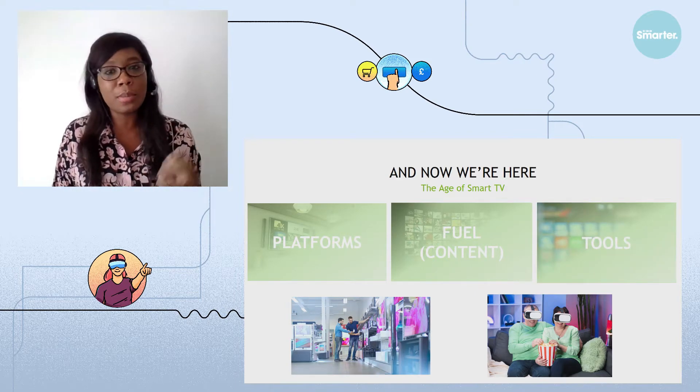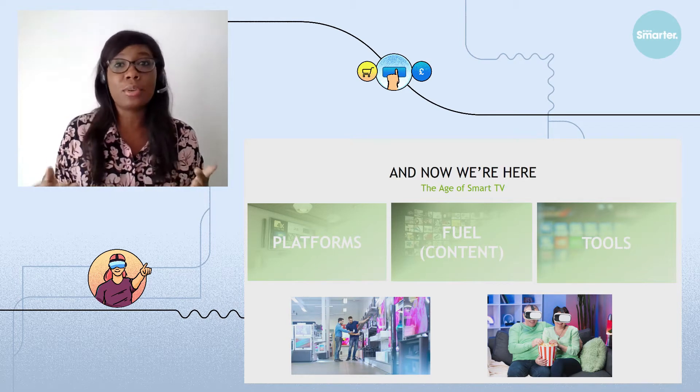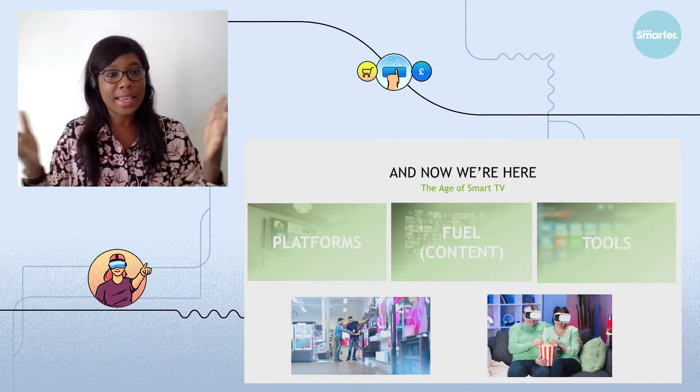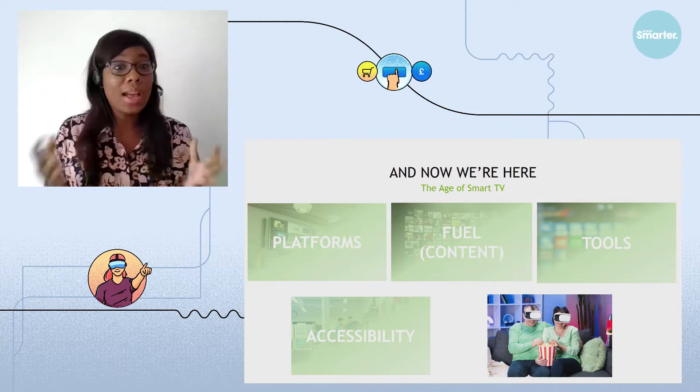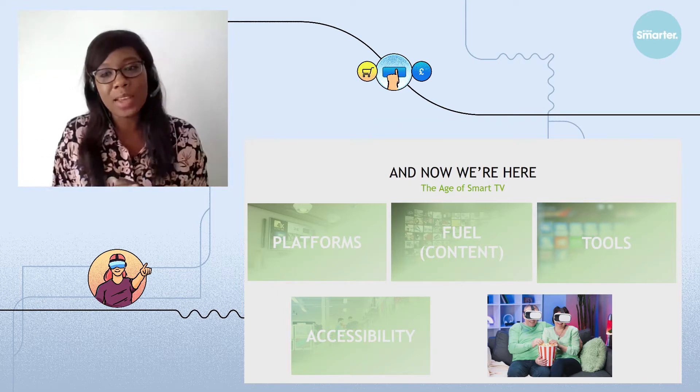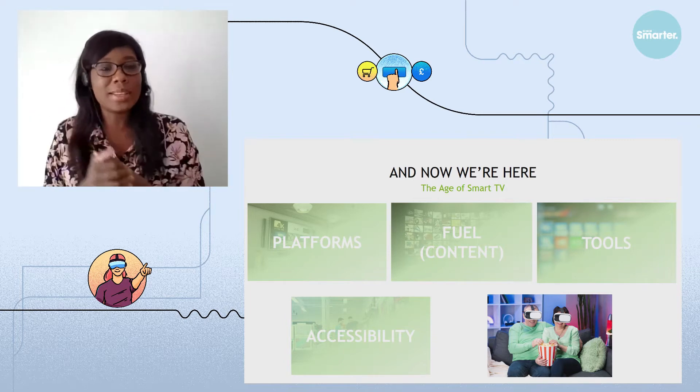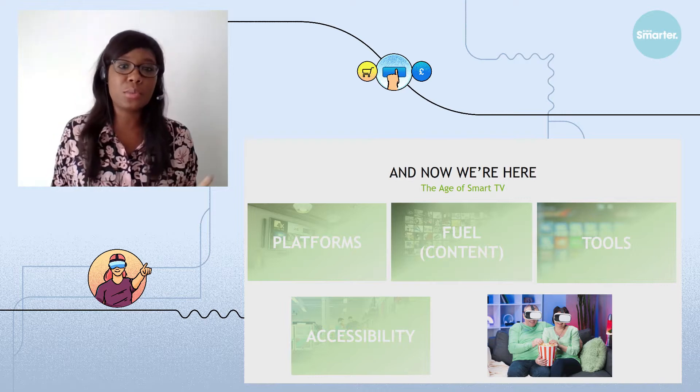We've also made advancements from a tools perspective. The tools have evolved. I can plug in a smart box into my TV and all of a sudden I get access to internet on my TV. Accessibility has also improved. That's how we went from 350,000 households to 27 million. I can buy a TV right now and get it delivered tomorrow.